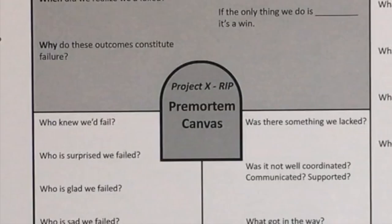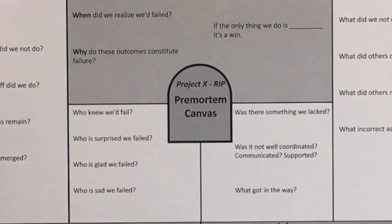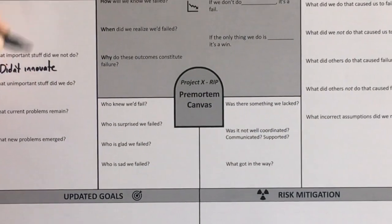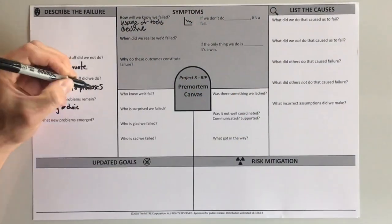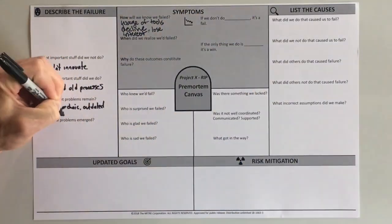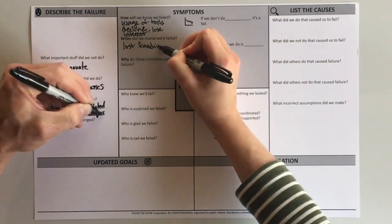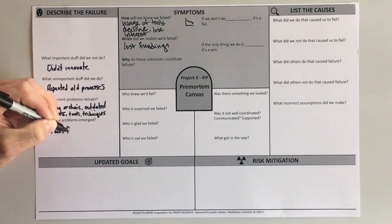This is the Premortem tool, a canvas that helps your team explore the future of something by imagining its complete and utter failure. It sounds like a downer, but this is a great way for teams to define success, identify risks and potential causes of failure, and develop mitigation strategies.